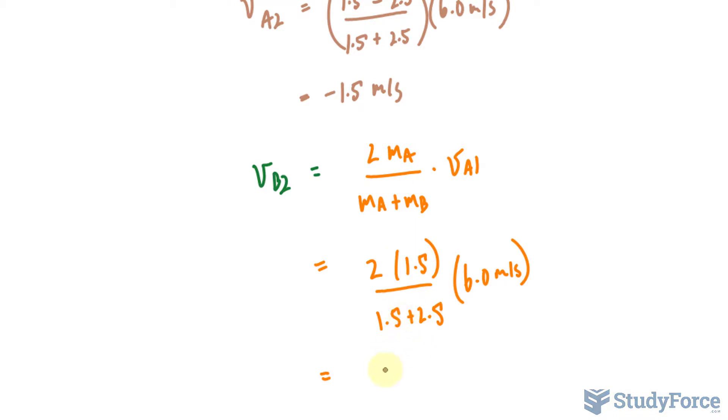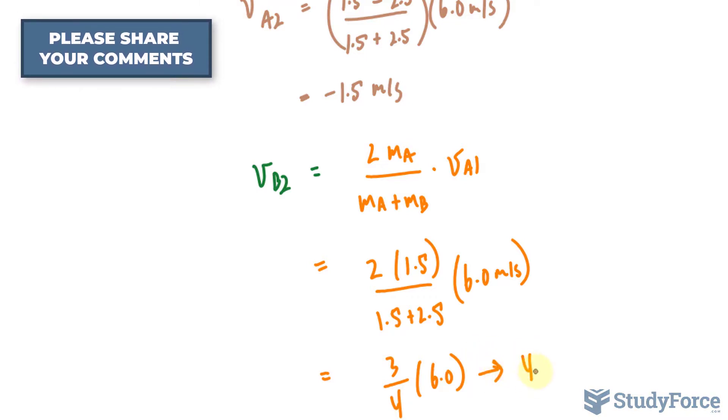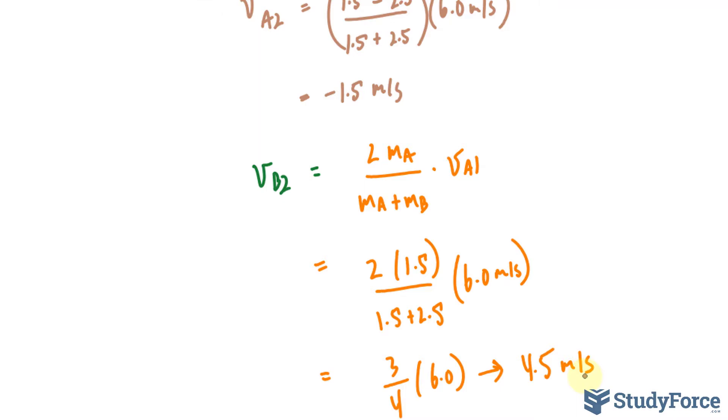Now at this point, 2 times 1.5 makes 3. And these two make 4. 4 multiplied to 6.0. 6 times 3 is 18 divided by 4 is 4.5. So 4.5 meters per second. Therefore, block B, which was at rest, the one that's being struck, moves off at 4.5 meters per second.